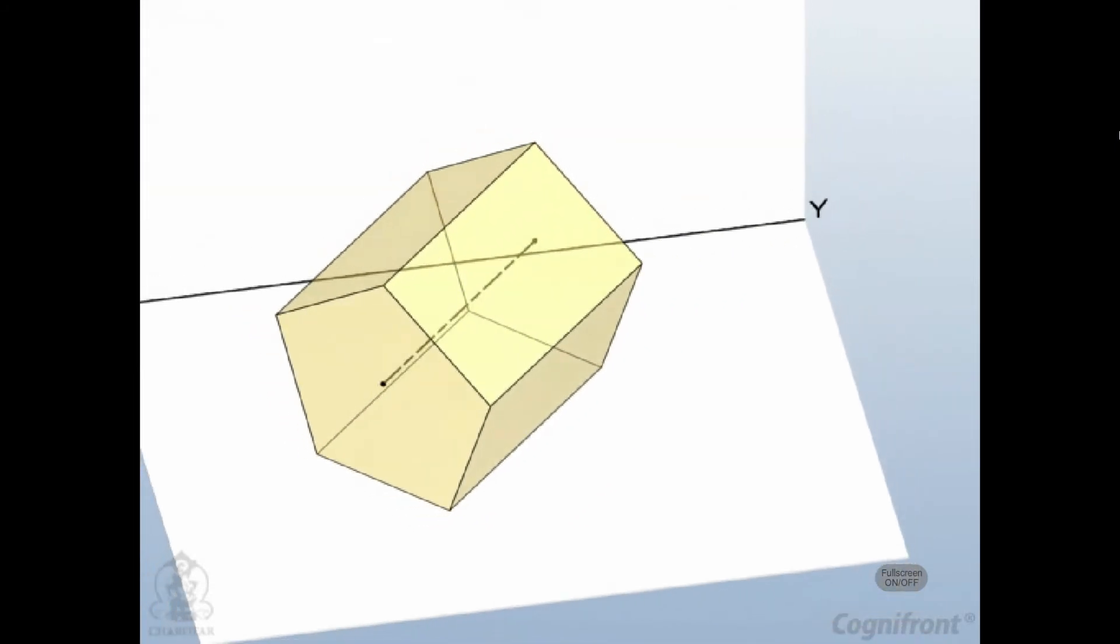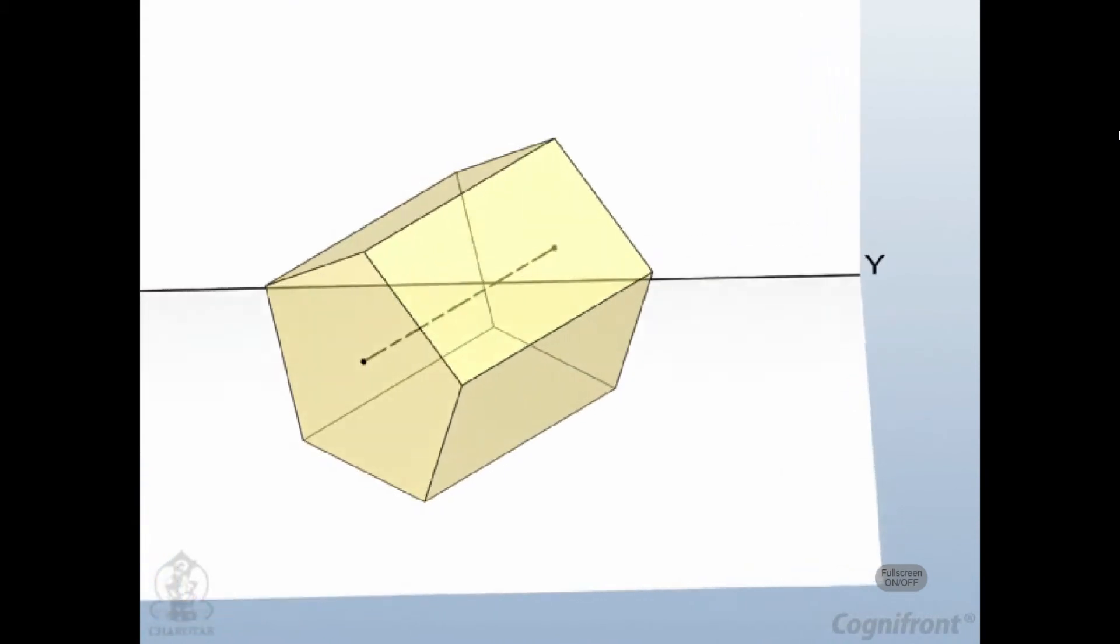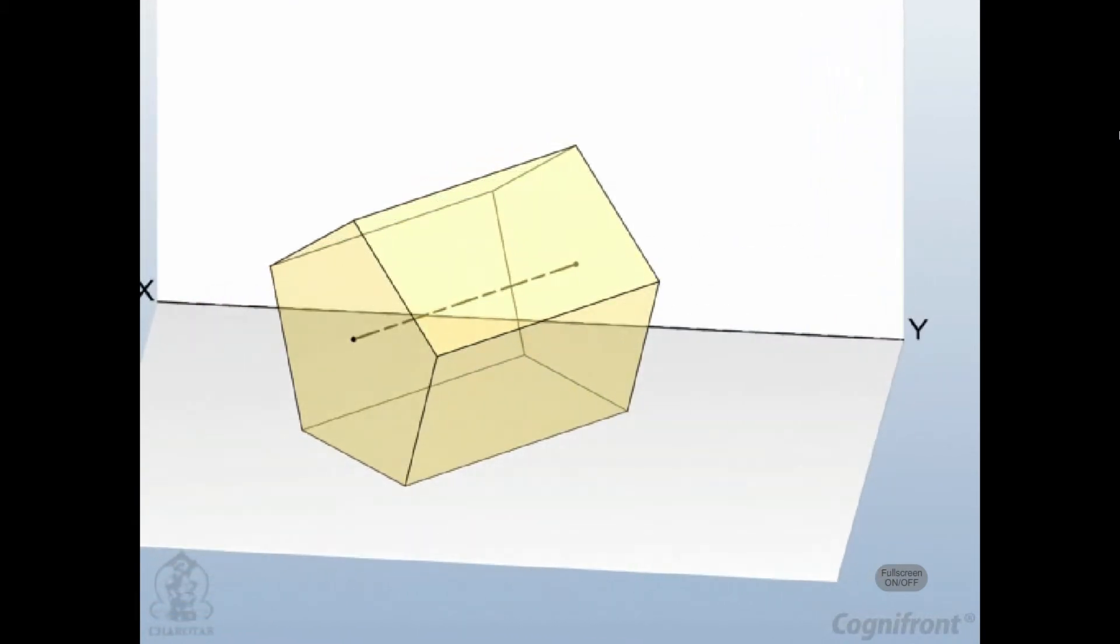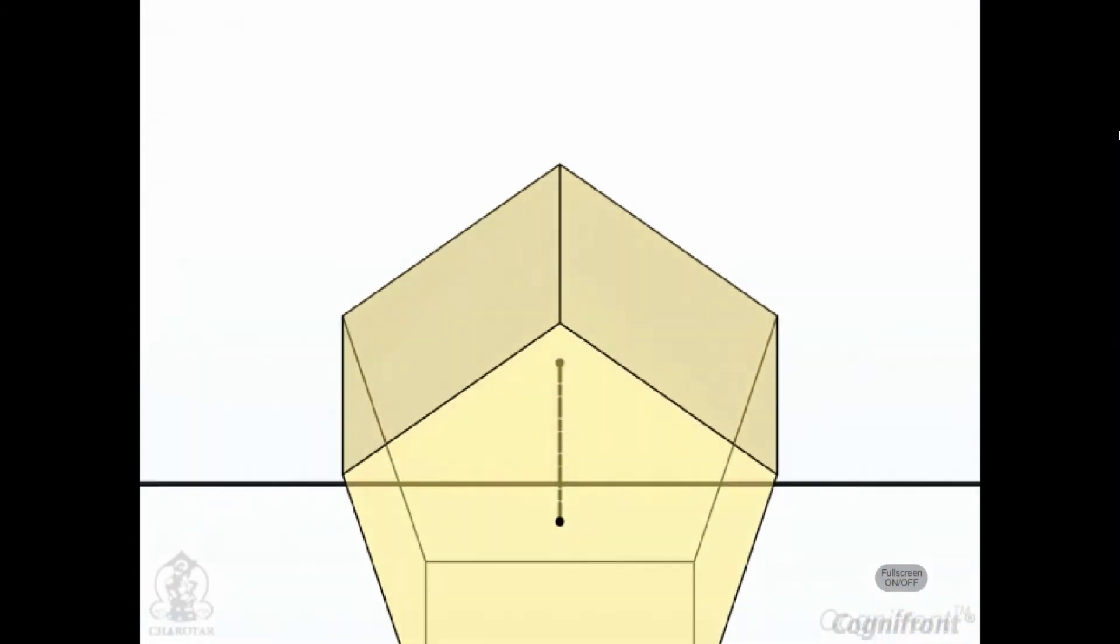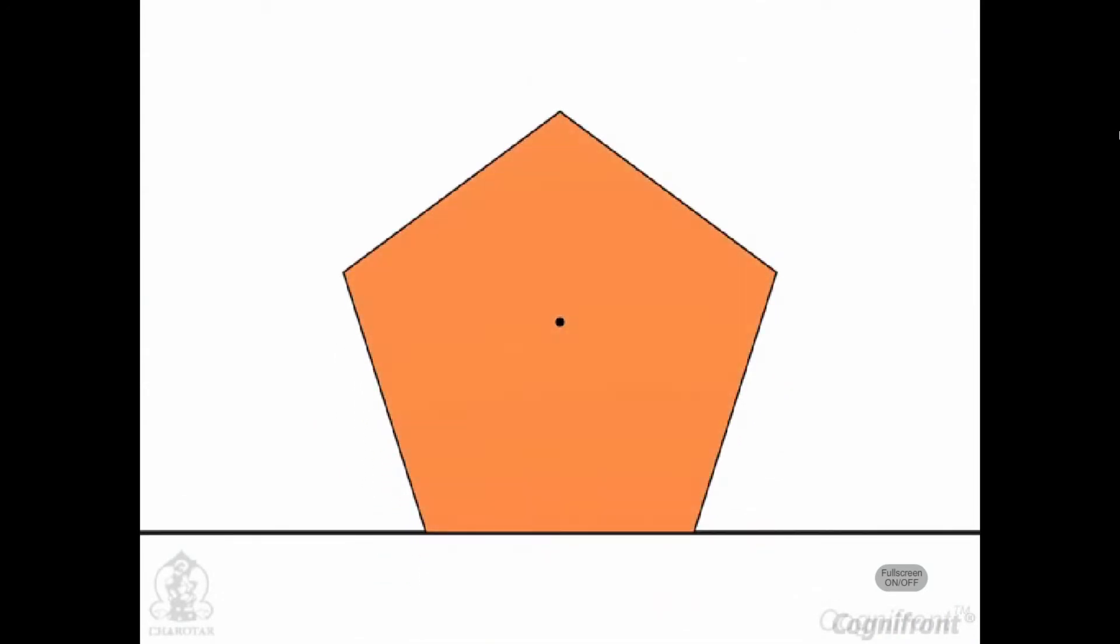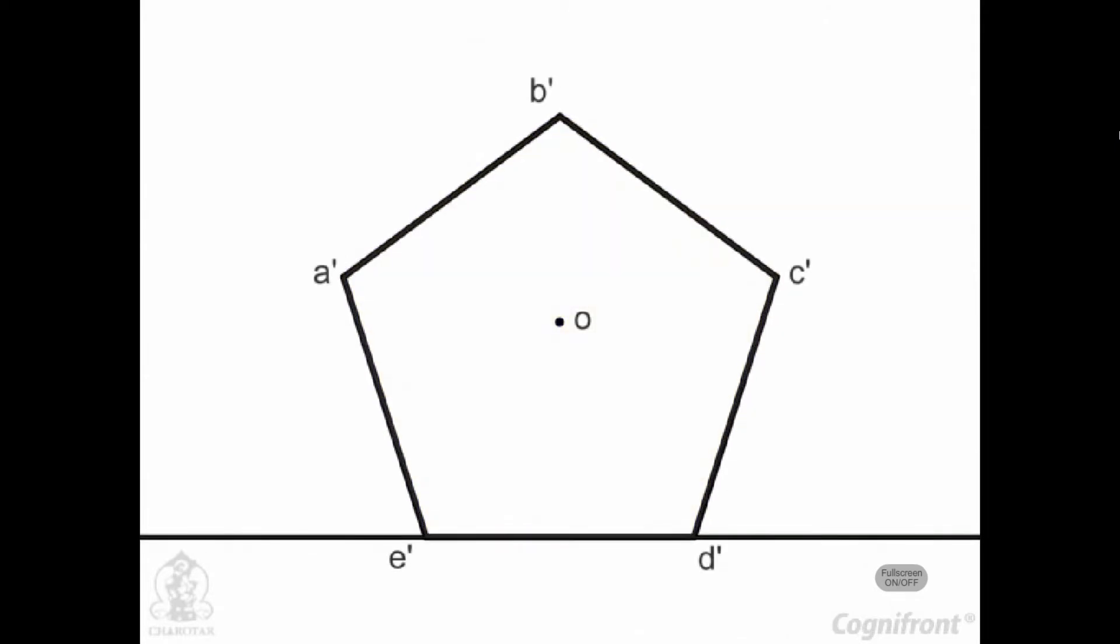Now to draw the orthogonal views in this position, we shall assume that its axis is perpendicular to VP. Observe that the true shape and size of the pentagonal prism is seen in the front view. We shall generate pentagon in the front view with base parallel to XY.